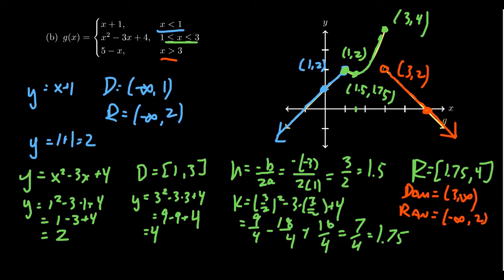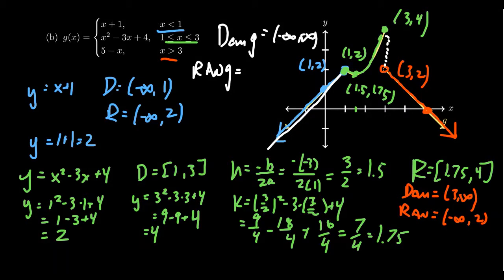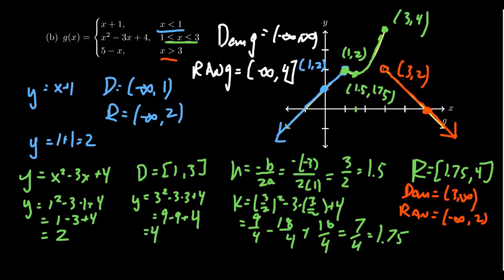Putting this all together: the domain of g is all real numbers, negative infinity to infinity — we go up to 1, from 1 to 3, and from 3 onwards, no problem. For the range, the blue part goes to negative infinity and so does the red part. There is a jump discontinuity at x equals 3, but we get all values between y equals 2 and y equals 4 because the parabola covers that. So the range is negative infinity to 4, with 4 included. It can be a little trickier to find the range, but if we can graph it — particularly piecewise functions — we can find the range. That really is the best strategy.